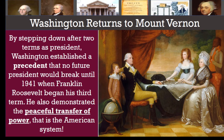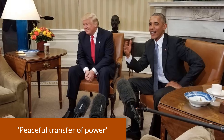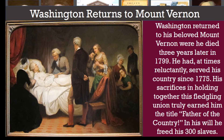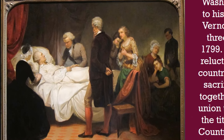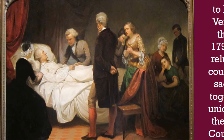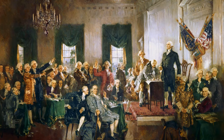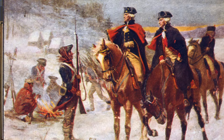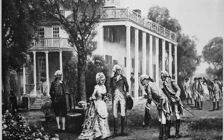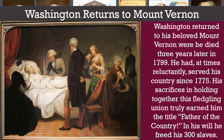Washington's retirement demonstrated one more important concept: the peaceful transfer of power that is the American system. Washington returned to his beloved Mount Vernon, where he died three years later in 1799. He had at times reluctantly served his country since 1775, and his sacrifices in holding together this fledgling union truly earned him the title of father of the country. In his will, he decreed that his 300 slaves would be freed upon the death of his wife.